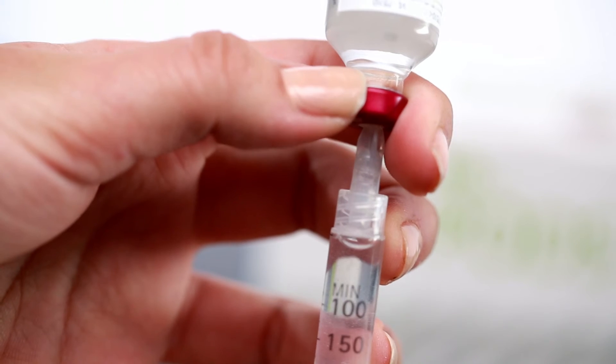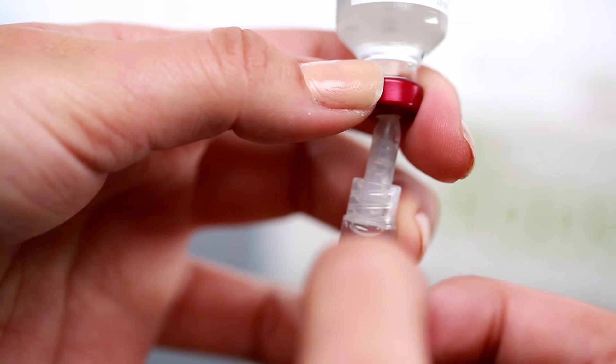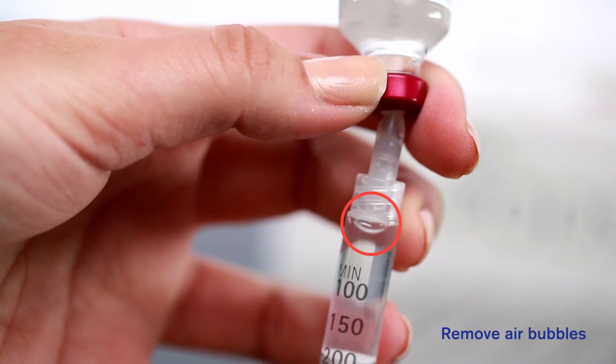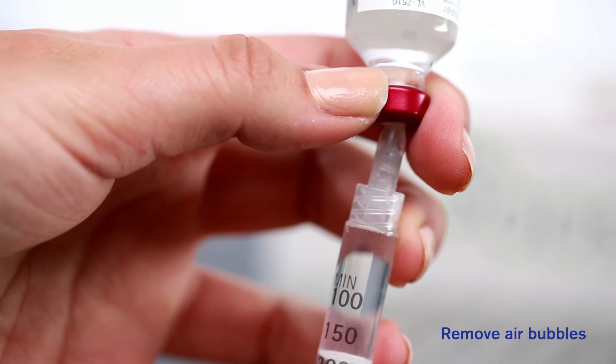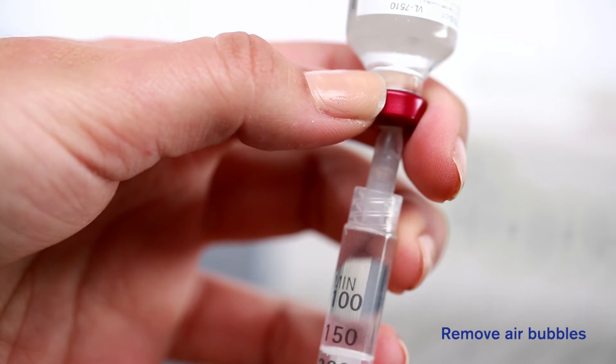To do this, point the needle upwards and tap the side of the syringe to move any air bubbles to the top. Now you can carefully push out any remaining air bubbles.